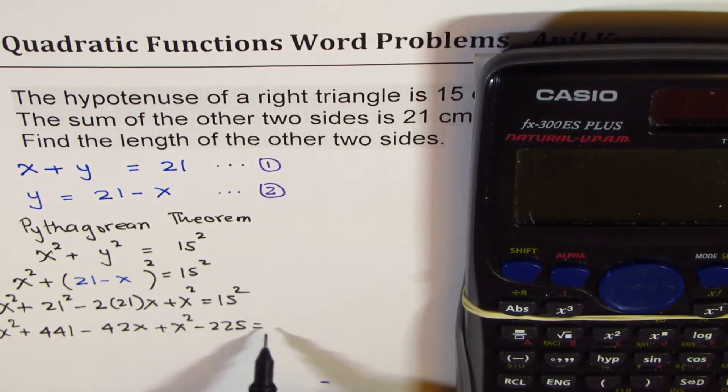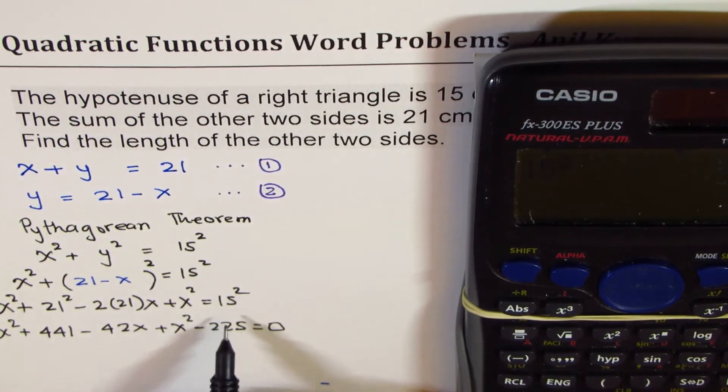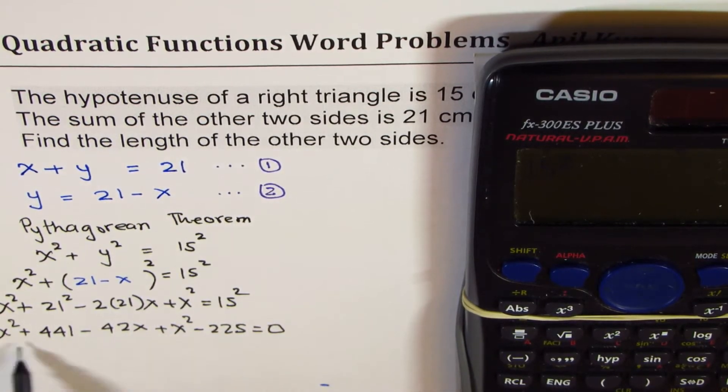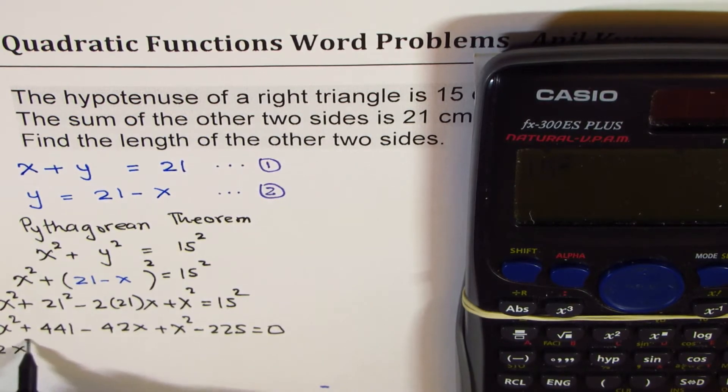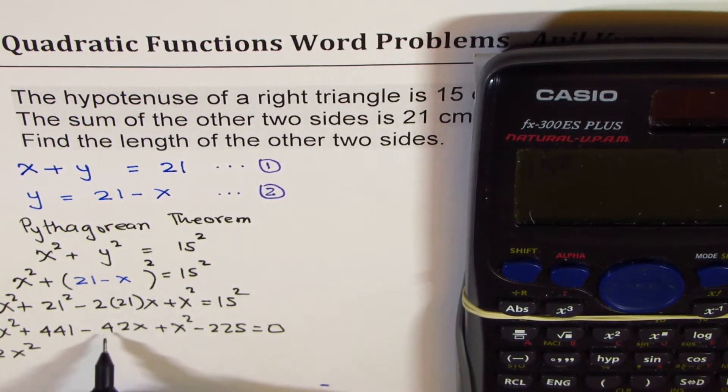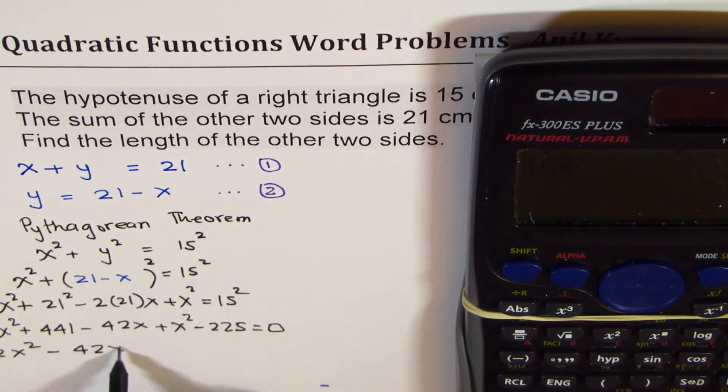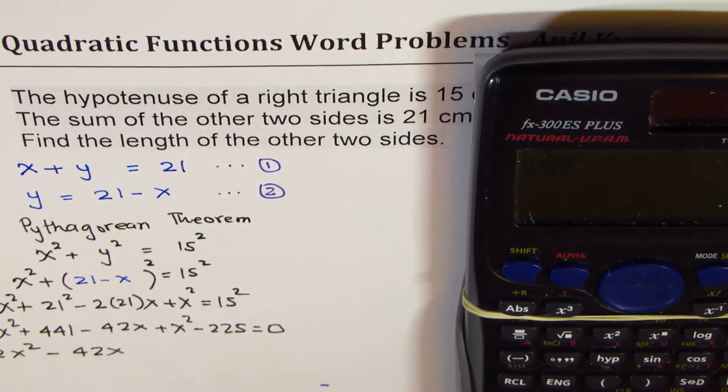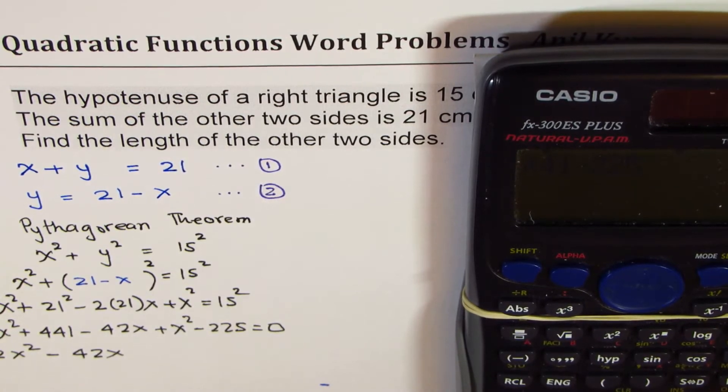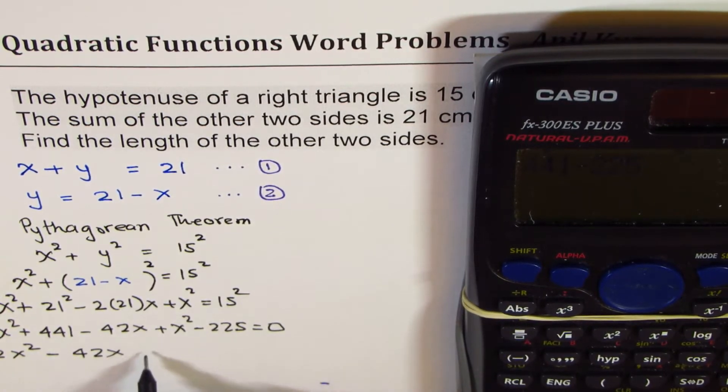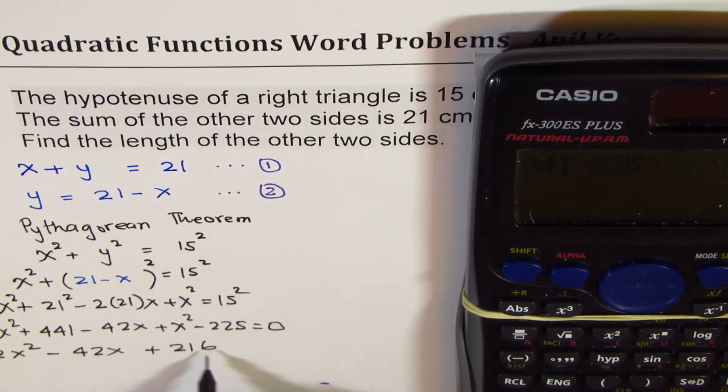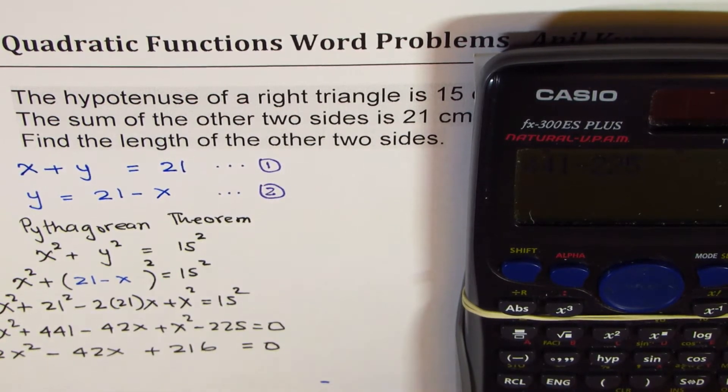So I hope this step is clear: we brought 225 to the left side. Now we can combine the like terms. x² + x² is 2x². Coefficient of x is -42. And these numbers: 441 - 225, that is 216. So we get 2x² - 42x + 216 = 0.